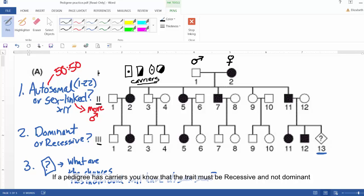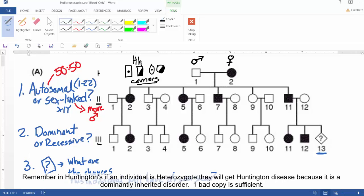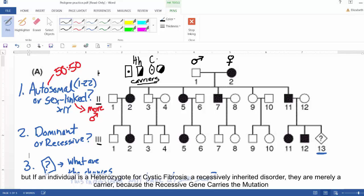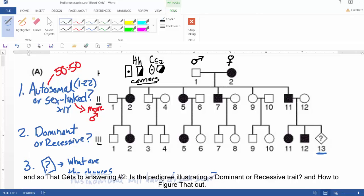So these carriers. And if you see carriers, then you know that it must be a recessive trait. Because remember, like Huntington's, if you're a heterozygote in Huntington's, you have Huntington's. But if you're a heterozygote with cystic fibrosis, you're a carrier. Because it's the recessive gene that carries the mutation.